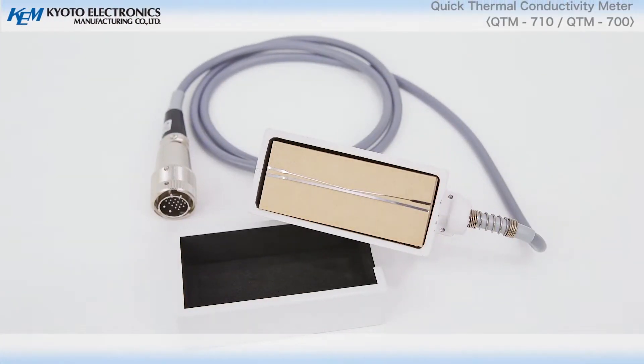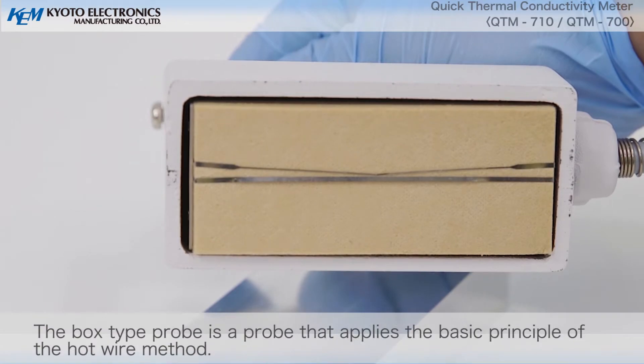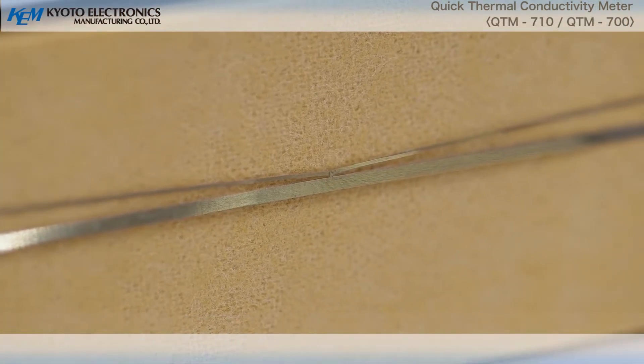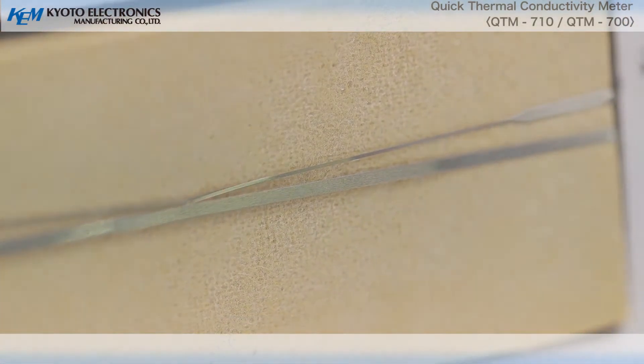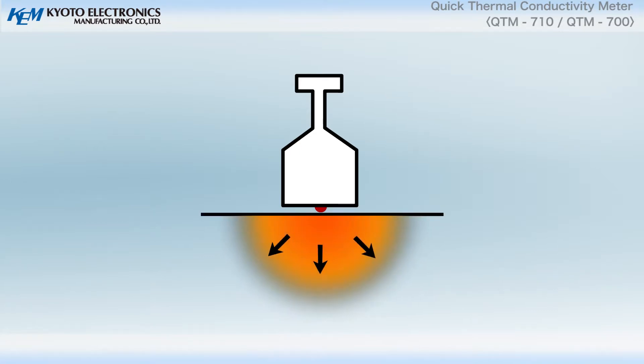Operating principle. Box type probe PD-11N. The box type probe is a probe that applies the basic principle of the hot wire method. By simply placing the probe on a smooth surface of the sample, you can easily measure its thermal conductivity.